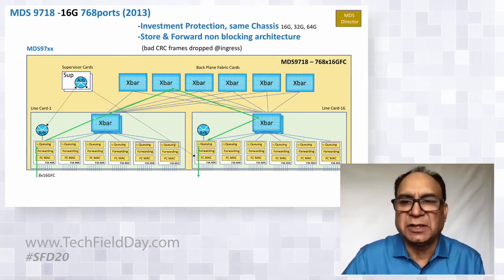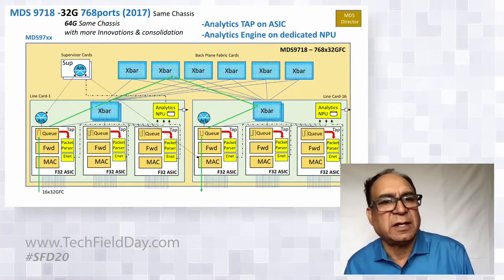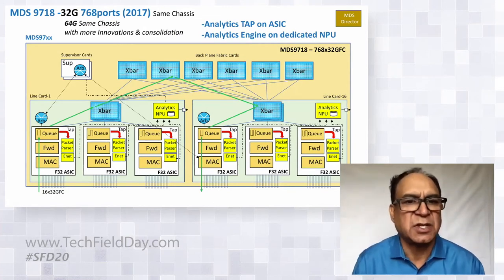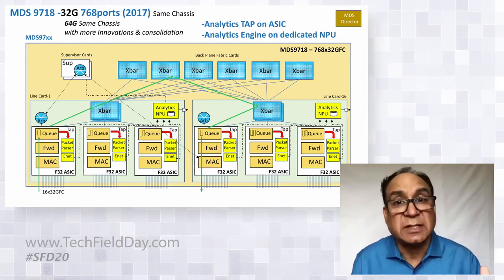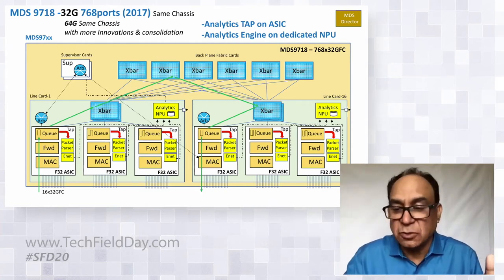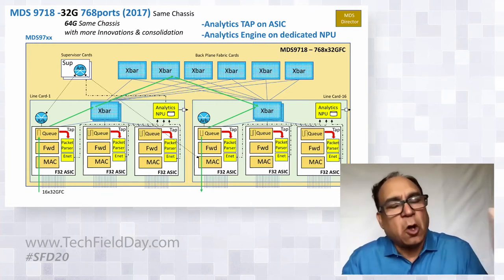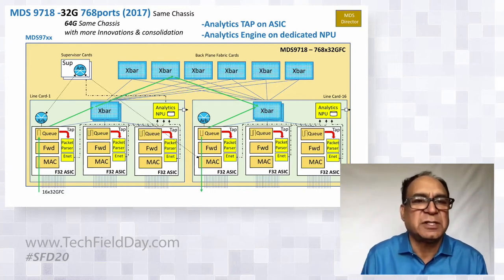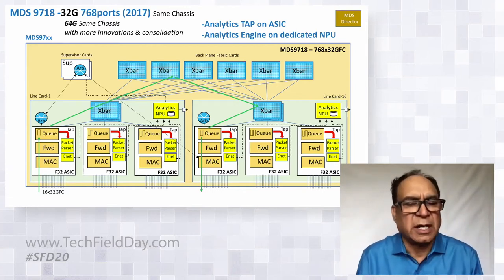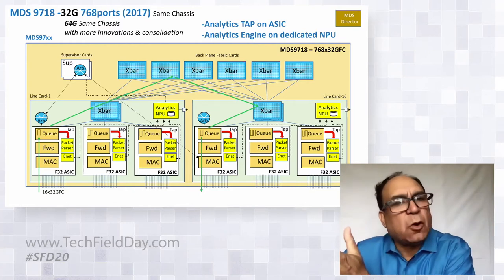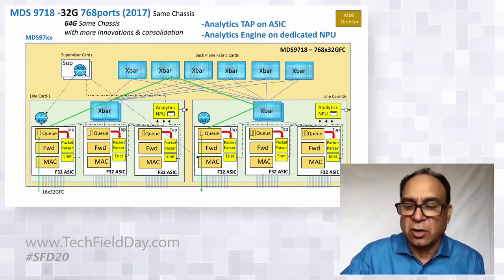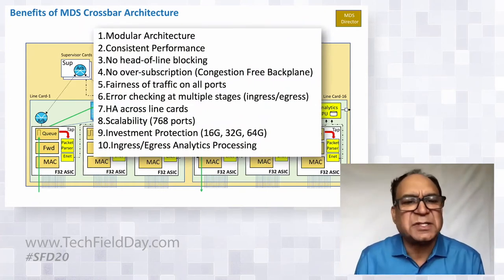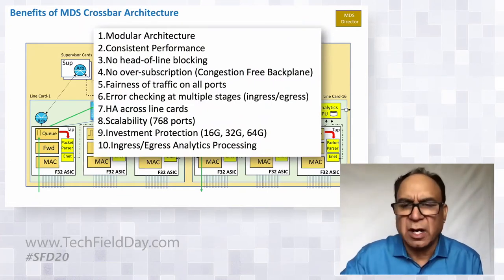It's an investment protection architecture with crossbar and central arbitration. We launched 16 gig in 2013, 32 gig in 2017, and 64 gig is being prioritized very soon — and it will be the same chassis. Customers don't have to replace the chassis going from 16 gig all the way to 64 gig. If 64 gig has a leg for another three years, that means over 10 years the same chassis has carried our customers. There are a lot of benefits: fairness, high availability, and modular architecture.